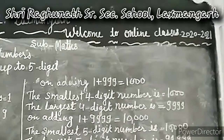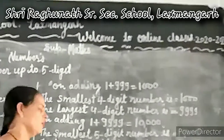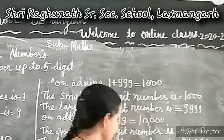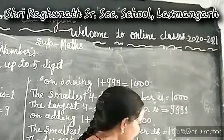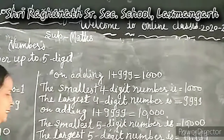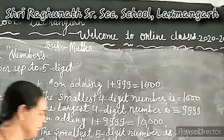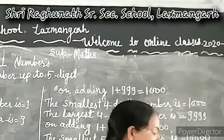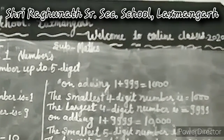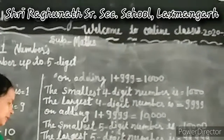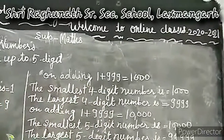As a shortcut, you can use this table to easily understand it. One digit's smallest number is 1 and greatest number is 9. Two digit's smallest number is 10 and greatest number is 99. Three digit's smallest number is 100 and greatest number is 999. Four digit's smallest number is 1,000 and greatest number is 9,999. Five digit's smallest number is 10,000 and greatest number is 99,999.